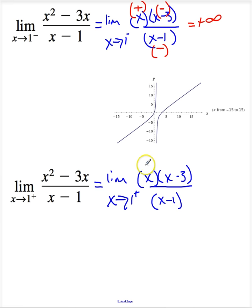As x approaches 1 from the right, this one's positive. This term right here will be negative again. And this term right here, let's see, from the right means it's greater than 1, so this term will be positive. So this whole thing becomes negative infinity.